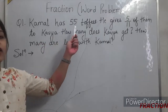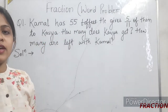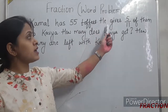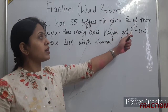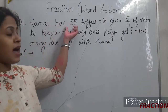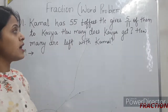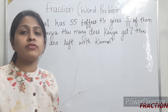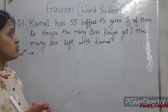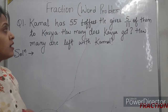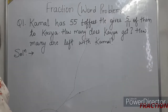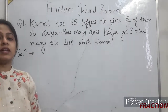Kamal has 55 toffees. He gives 5 upon 11 of them to Kavya. So in total Kamal is having 55 toffees and he has given 5 by 11 of them to Kavya. The question is: how many toffees does Kavya get?